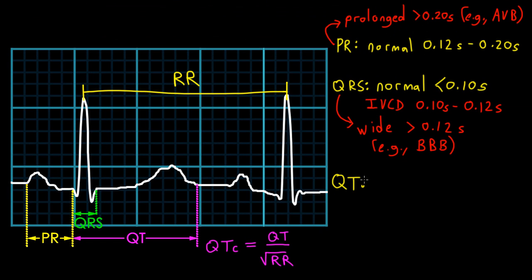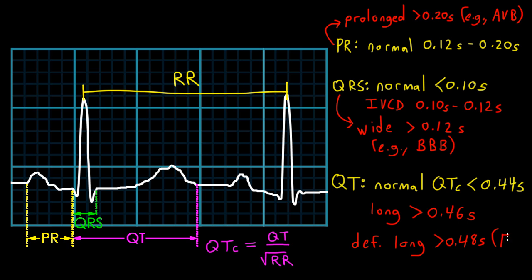A normal QTc is less than 0.44 seconds. However, you might have noticed that it seems like a lot of patients' QTcs tend to be longer than that. And so for that reason, a QTc that's longer than 0.46 seconds is pretty much universally accepted as being long. And a QTc that's greater than 0.48 seconds in a woman or greater than 0.47 seconds in a man is very long.